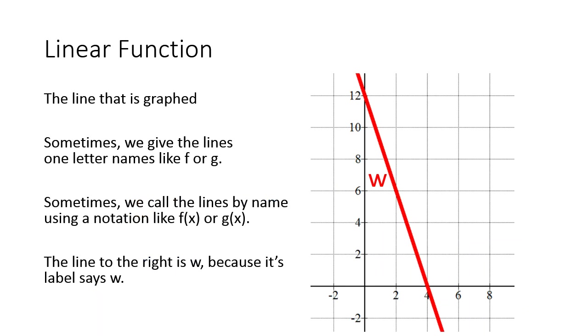Let's take a look at our first vocabulary word, linear function. A linear function is just a line that is graphed on a grid. If we take a look at it, notice there's a w label next to the red line. Our line called w is a linear function. It's just a line.